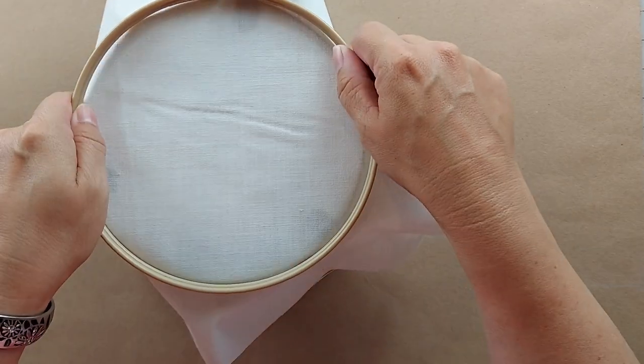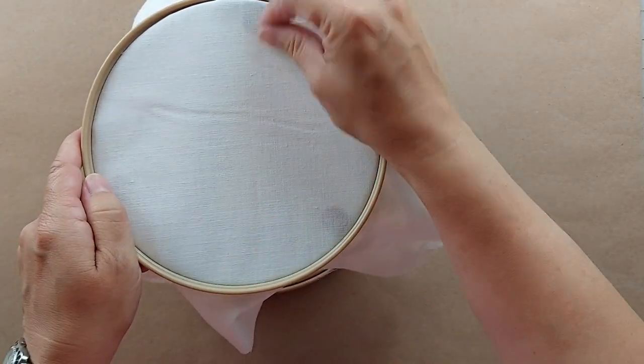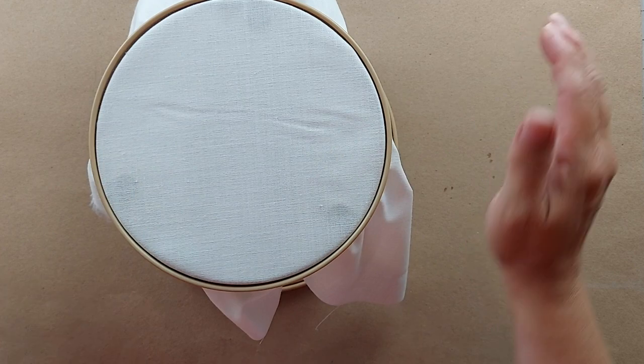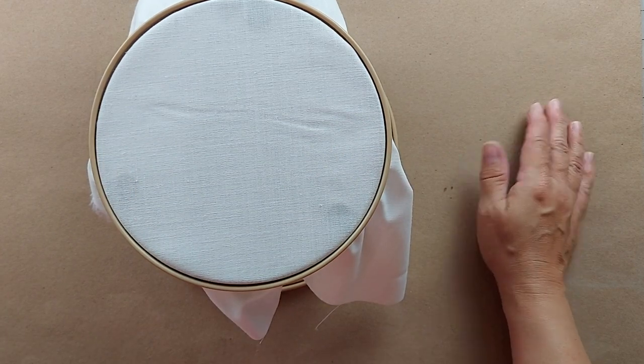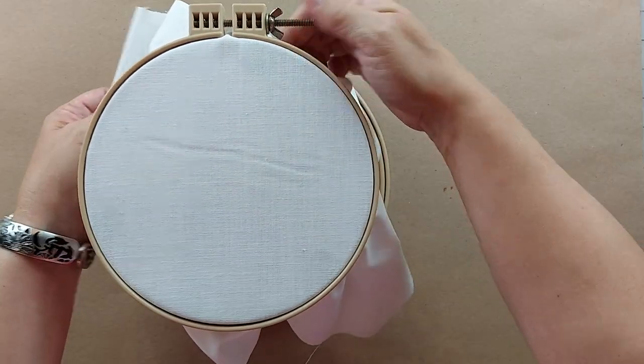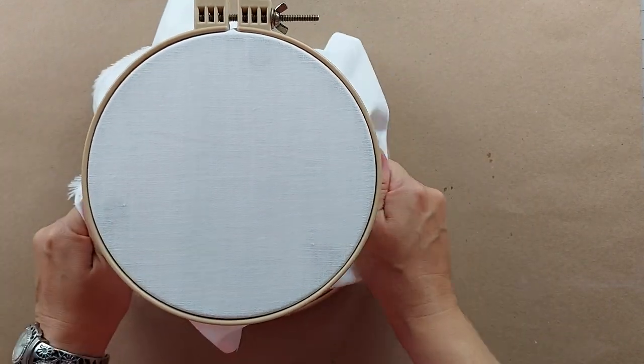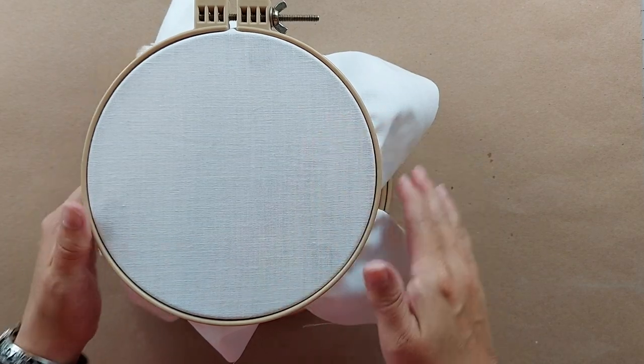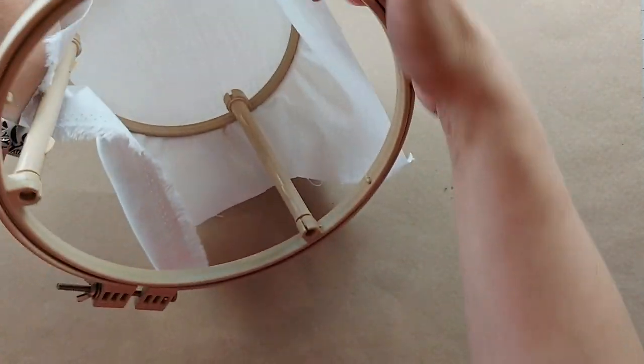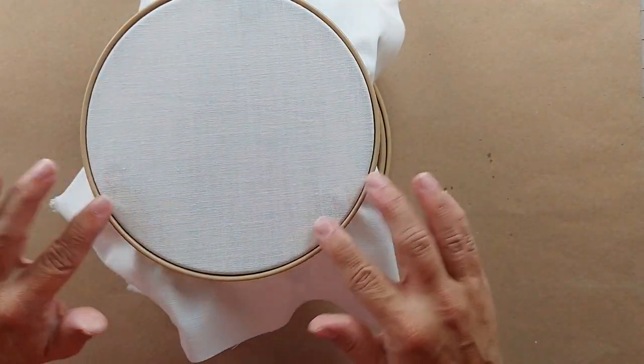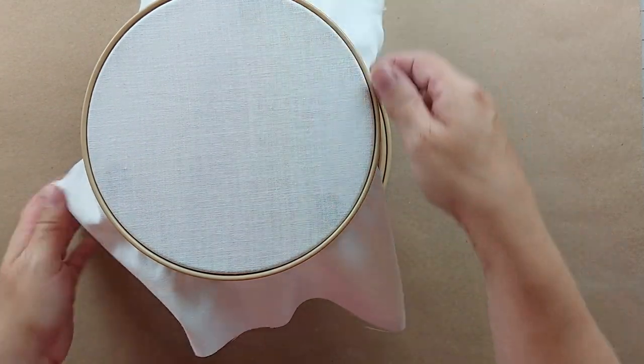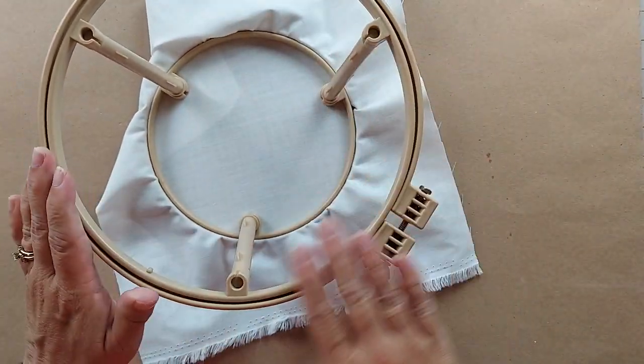And then when you want to use it, you can just add the weaver's cloth, or if you're using it for quilting or cross stitch, you can add whatever foundation fabric you're using. As you can see, the pillars don't interfere with the fabric here, and be the same on the larger side.